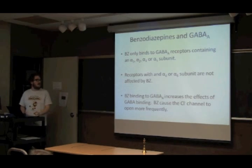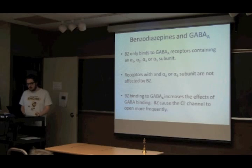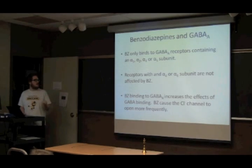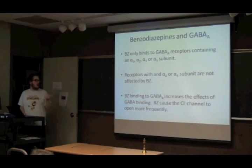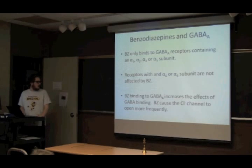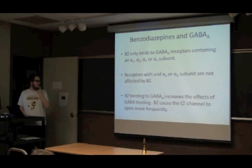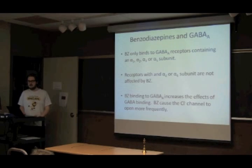Benzodiazepines will only bind to GABA receptors that have certain subunits — alpha-1, 2, 3, or 5 subunits are needed. Receptors that have an alpha-4 or alpha-6 subunit are not affected by benzodiazepines. Benzodiazepines increase the effect of GABA on the GABA receptor.